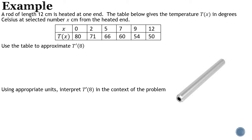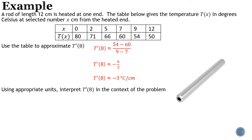The temperature at x = 8 is not given in the table, so we use the x values on either side — 7 and 9 — and approximate with the slope formula. We use the corresponding temperature values (76.0 and 95.4) to approximate the slope at 8 centimeters. Simplifying, we find it's approximately negative 3 degrees Celsius per centimeter.